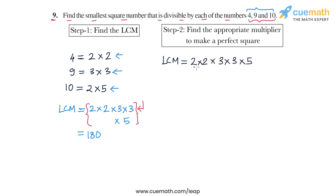Now if you pair up the prime factors, you have a pair of 2, you have a pair of 3, but this 5 is left unpaired. So by what number should you multiply the LCM so that you get a perfect square? Well, that number has to be 5, so that you can complete this incomplete pair of 5.